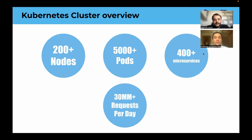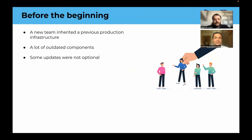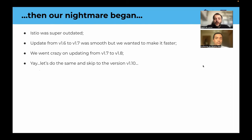The bank is a giant and we manage one of the products from its portfolio. The Kubernetes cluster that we manage has more than 200 ingresses, more than 5,000 pods, more than 400 microservices, and receives more than 30 million requests per day. It started with an organizational change that resulted in a new team inheriting a fully provisioned infrastructure. This infrastructure had many components with expired versions. It was necessary to map out the order in which the updates would be carried out. Not doing this update was not an option because it could possibly impact the entire environment, making it totally unavailable. As Guilherme said, we had to do some non-optional updates, including Istio. At that time, we were running version 1.6 when the current version was 1.17.